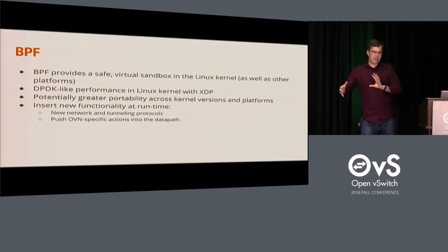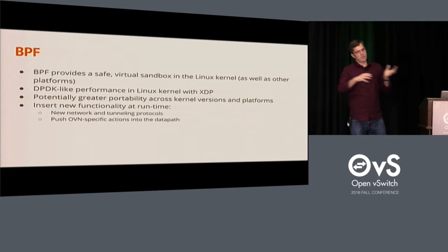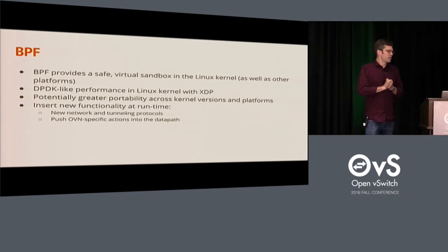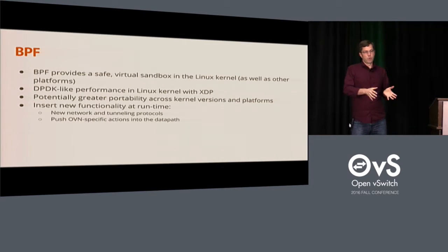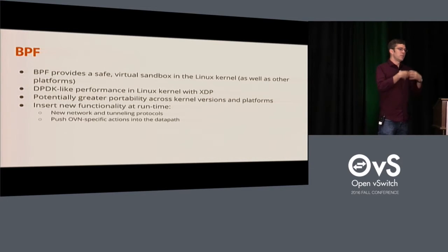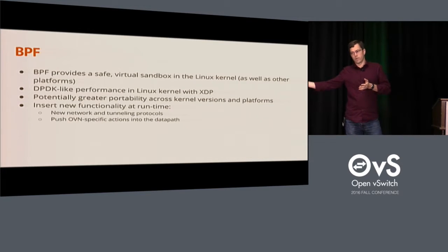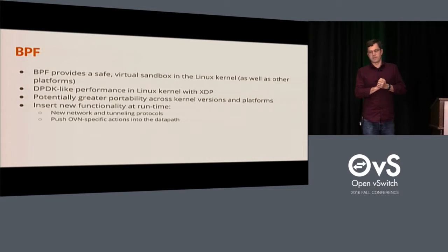In the data path — whether the Linux kernel or DPDK user space — you have basically an interpreter similar to the JVM, and at run time you can insert new code and new capabilities. That provides a lot of promise for improving portability. In an ideal world, we'll be able to write the data path code once in BPF and run the same code on all those different platforms. Thomas Graf is going to get into quite a bit of detail on how that will work.